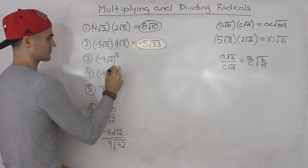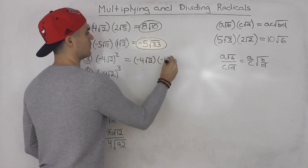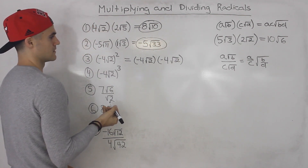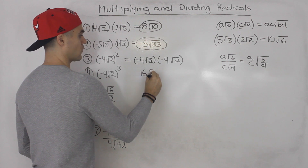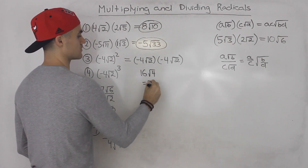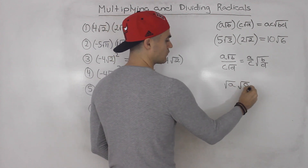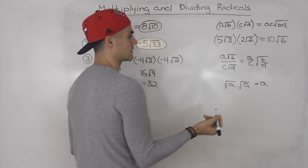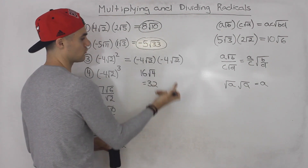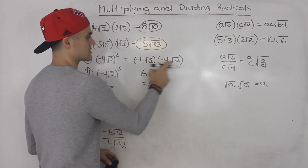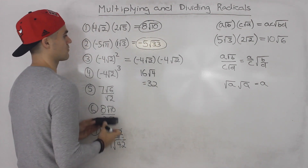Next, (-4√2)². We can rewrite this as -4√2 times -4√2. Then -4 times -4 gives us 16, and √2 times √2 gives us √4, which is just 2. So 16 times 2 gives us 32. That's actually another rule: whenever you have √A times √A — multiplying the same radical — that just equals the number inside the radical. So the final answer for number 3 is 32.